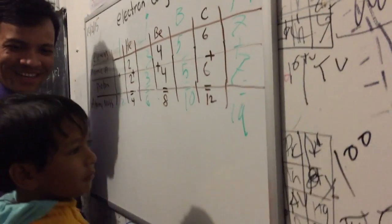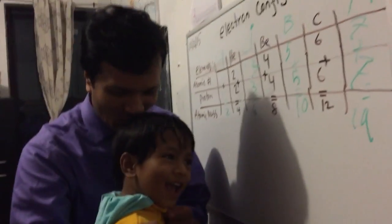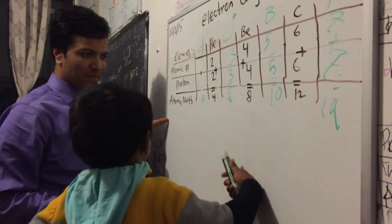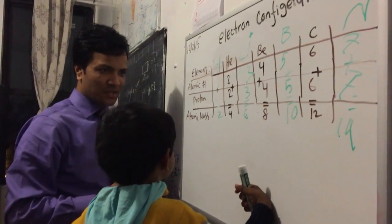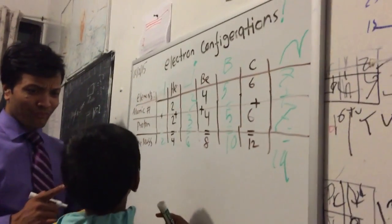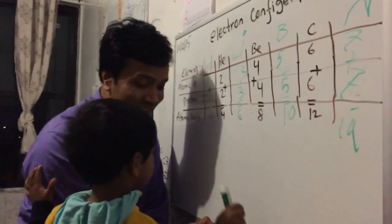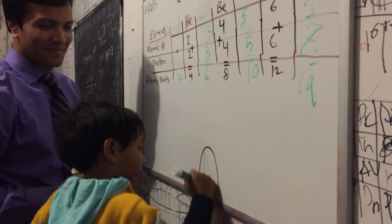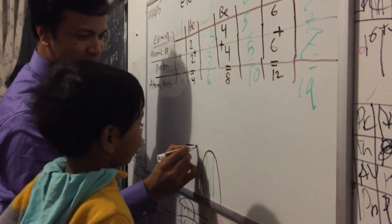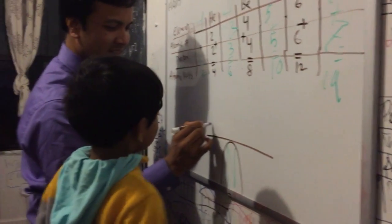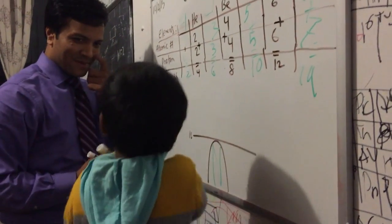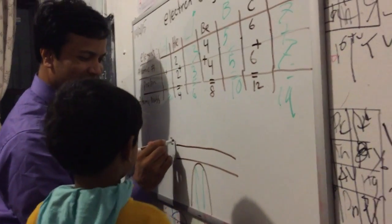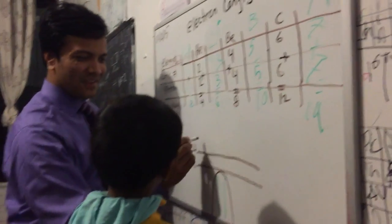Wow, I am very very proud of you! Okay, now let's do something else. Now we're gonna do electron configuration. So write: one s, two s, and two p.